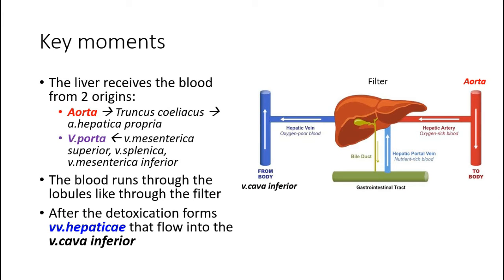The liver is a peculiar organ because it receives blood from two origins. Oxygen-rich blood comes from the aorta through the arteria hepatica propria, while venous blood rich with nutrients goes through the venoporta. This vein does not drain the liver — it brings deoxygenated blood toward the organ because the liver acts as a big lab that filters the blood. After detoxification, the venous blood of the liver — the venae hepaticae — flows into the vena cava inferior and then into the heart.